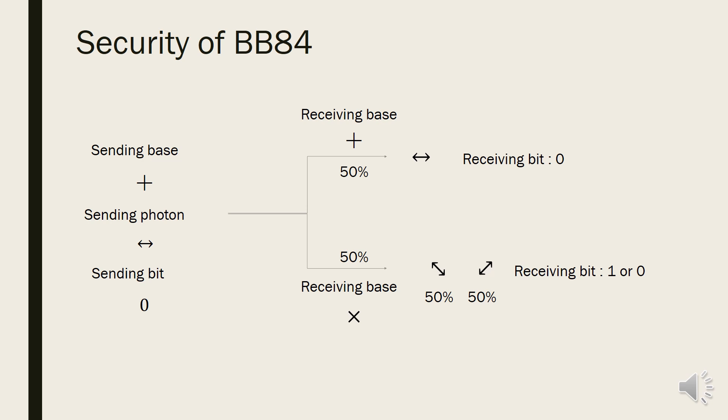If Alice sends 0 with rectilinear bases, and eavesdropper checks with same bases, he can receive the right one. Chance to do this is 50%. On the other hand, if he checks with diagonal bases, he'll receive 45 degree or 135 degree photon randomly. Chance to pick diagonal bases is 50%, and to receive 45 degree polarized photon is 50%. So it is 25%. Therefore, the whole chance to get correct information and not be discovered from them is 75%.